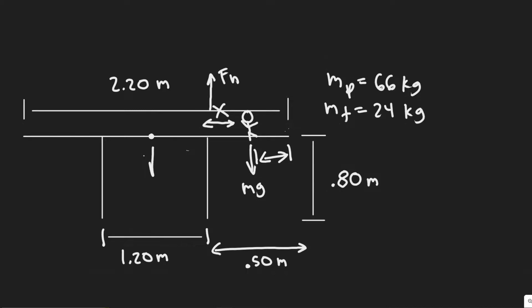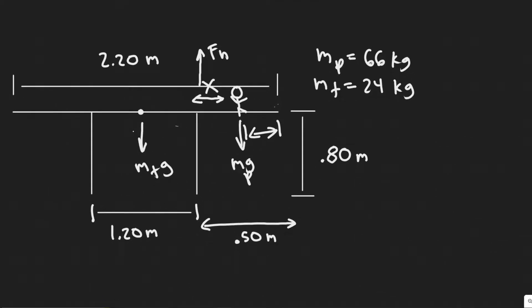We know it's going to have a force due to gravity. This one is mTG - the table mass times gravity - and then this one is mPG, the mass of the person times gravity.